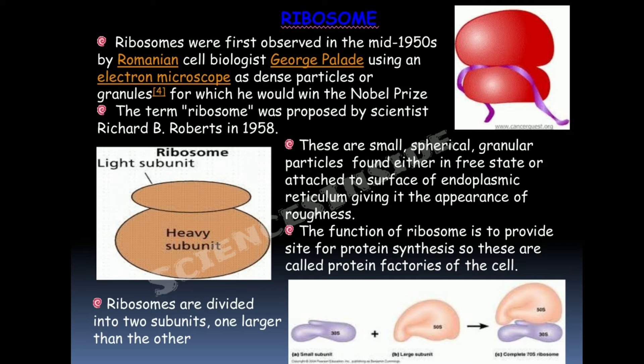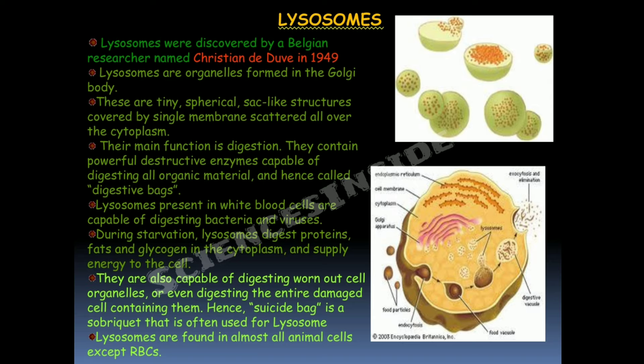Lysosomes were discovered by Belgian researcher Christian de Duve in 1949. They are organelles formed in the Golgi bodies — tiny spherical sac-like structures covered by a single membrane, scattered all over the cytoplasm. Their main function is digestion; they contain powerful destructive enzymes capable of digesting all organic material, and they are called digestive bags.